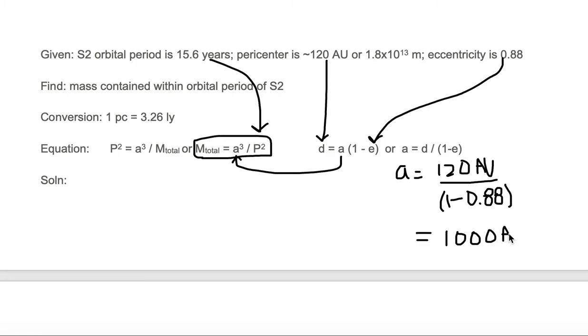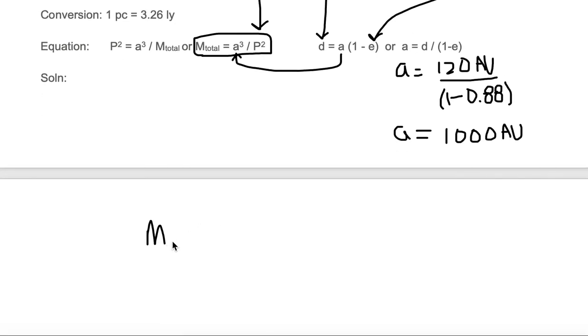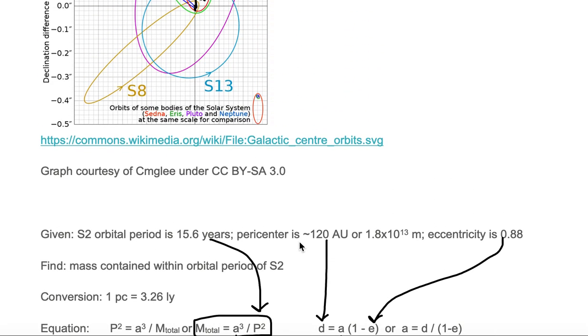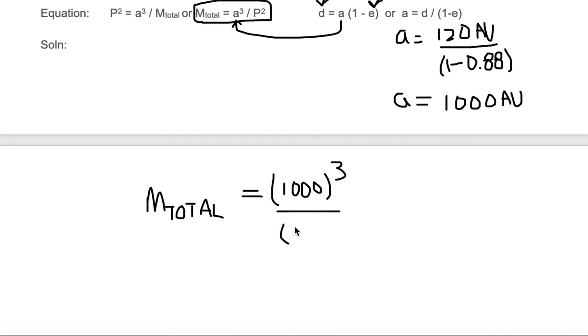So we have a value here of 1,000 and our units are AU. So now we know the semi-major axis distance of a. And we can easily substitute it into Newton's version of Kepler's third law to find the total mass contained within that elliptical orbit. All we need to know is a cubed and P squared. So a is 1,000 and we need to cube it. And then we need to divide that by P squared. We're given P, P is 15.6 years, so we just need to put that in, 15.6 squared.